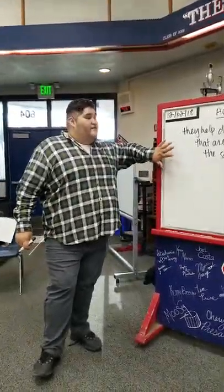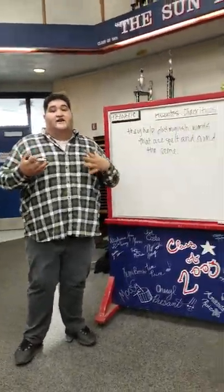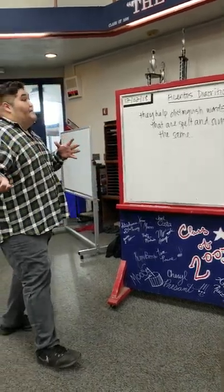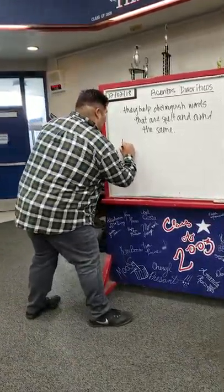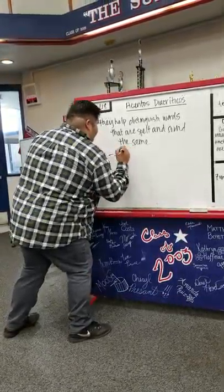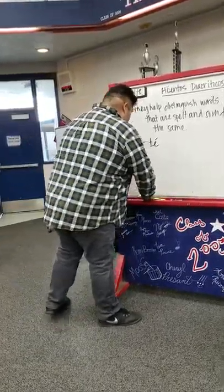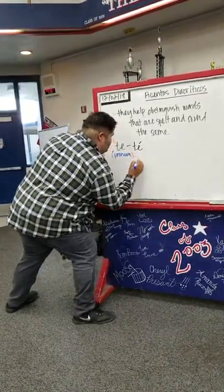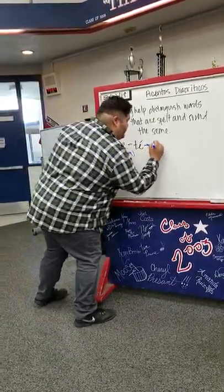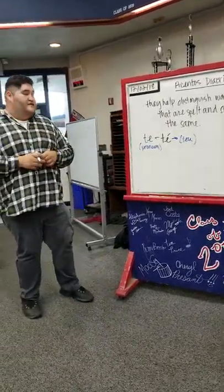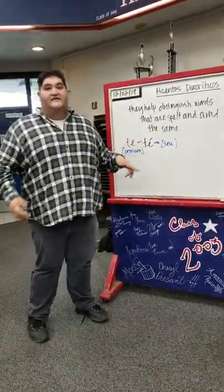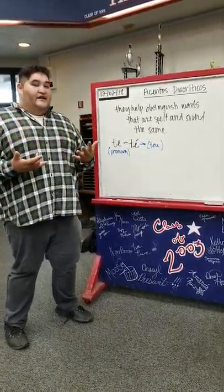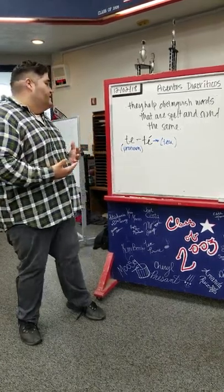The main function of diacritical accents is this: in the Spanish language, there are some words that are spelled entirely the same way and sound the exact same, but they don't necessarily mean the same thing. Prime examples would be te and té — te serves as a pronoun, while té means tea. If you were to use both of these words in a sentence and one did not have the diacritical accent, the sentence structure would be very unusual and we wouldn't know exactly what you were referring to.